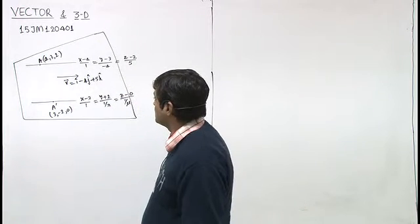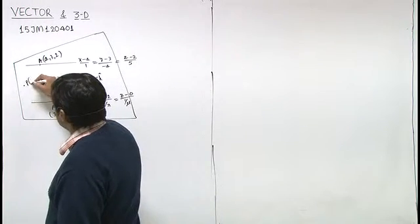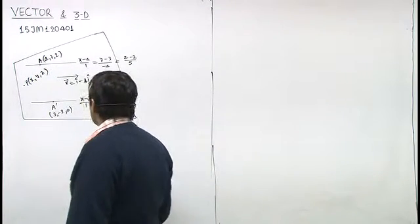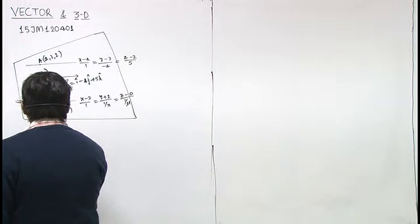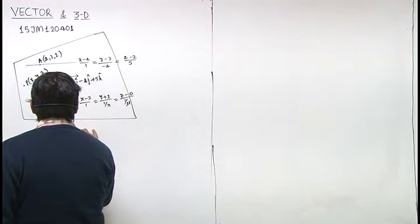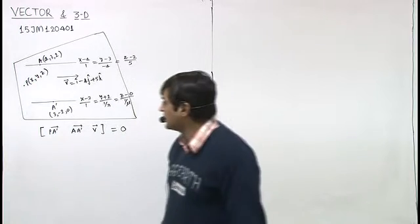Yeh bhi plane pe lai karega. That means plane pe dih mein koi sabhi point x, y, z leluhun. So we can observe that box product P a dash, a a dash and vector v should be 0, right.